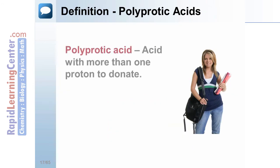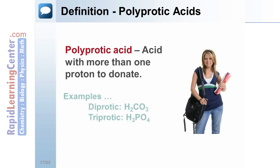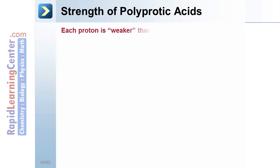Polyprotic acids have poly, many, protons, which can donate. An example of a diprotic acid is H2CO3. Triprotic is H3PO4. Each proton in a polyprotic acid is weaker than the previous one.